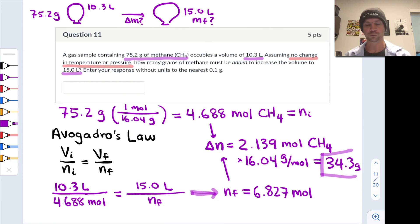That's exactly how the numbers shake out. 34.3 is a little less than half of 75.2, and 15 liters is a little less than 1.5 times 10.3 liters. So the sanity check confirms that 34.3 is on the right scale.